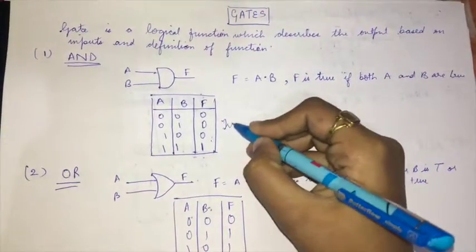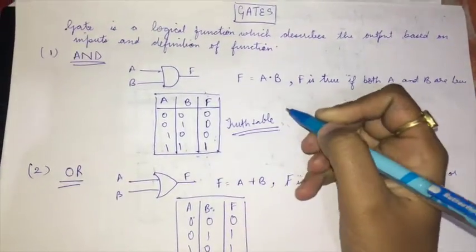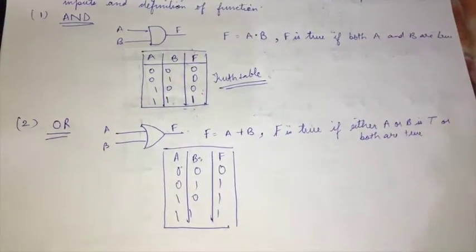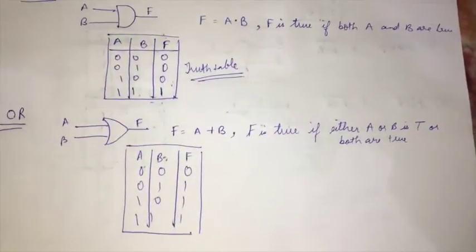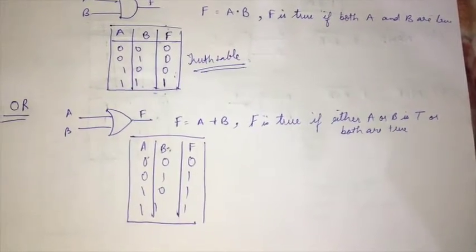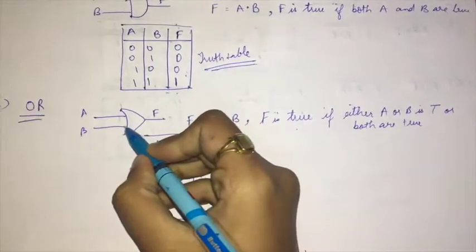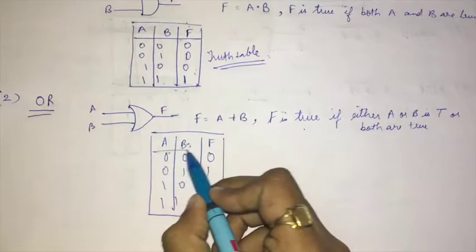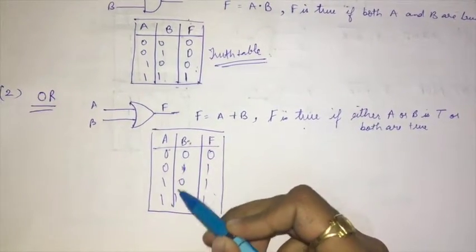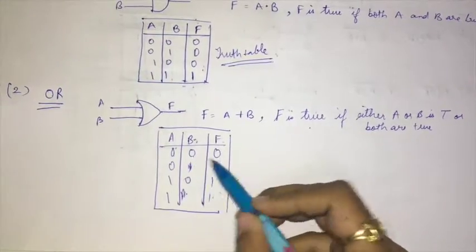Moving on to the OR gate: f is true if either A or B is true, or both are true. This is the OR gate symbol and truth table. We see that if any one of A or B is true, f is also true, and if both are false, f is false.